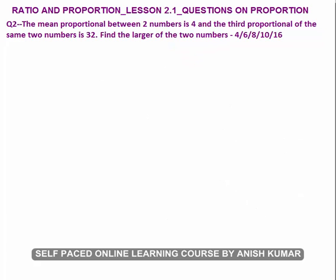Second question: the mean proportional between two numbers is 4 and the third proportion of the same two numbers is 32. Find the larger of the two numbers. Let the two numbers be a and b. Their mean proportional is 4, so a, 4, and b are in continued proportion. Therefore a by 4 equals 4 by b, giving us a into b equals 16.